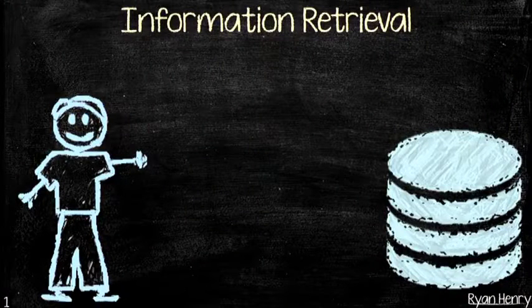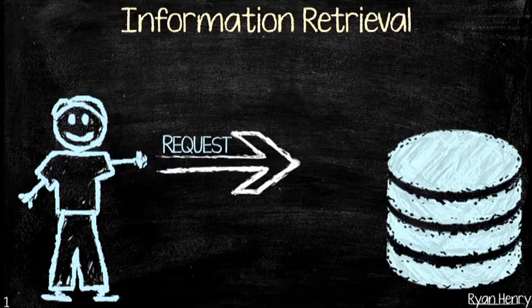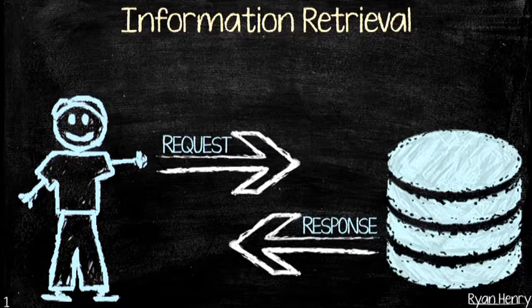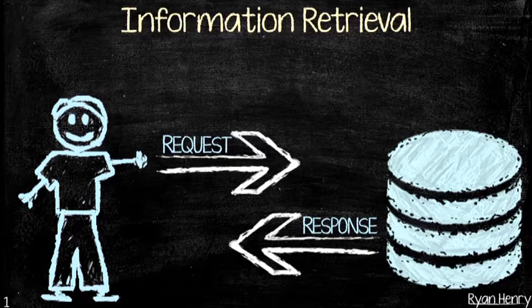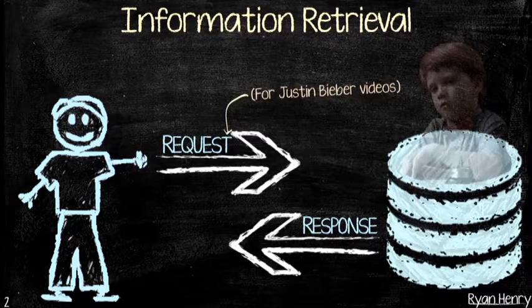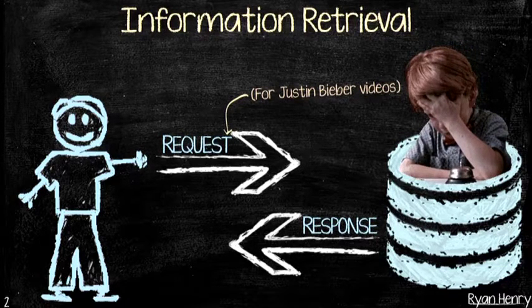So let's start with a problem statement. Private information retrieval has something to do with information retrieval, which is this basic problem of a user trying to fetch some sort of data from a database. The user issues a request and gets back a response. What we're interested in is: what if we want some notion of privacy? For example, suppose this request is for Justin Bieber videos, which might be rather embarrassing. Can we protect the privacy of this user who's looking for Justin Bieber videos on the internet?